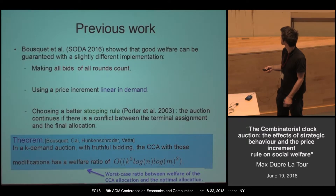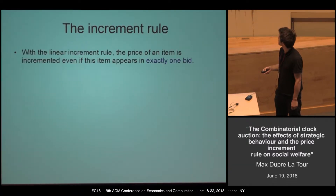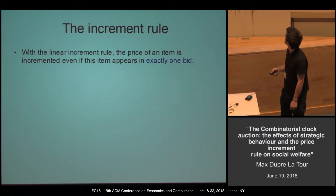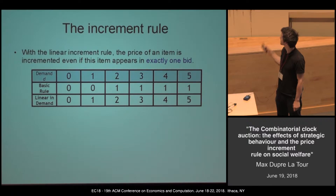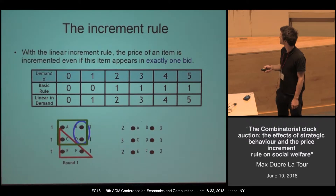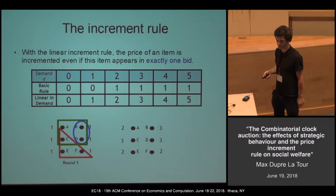The welfare ratio is the worst-case ratio between the welfare of the CCA allocation and the welfare of the optimal allocation. The main reason it is not satisfying is that with the linear increment rule, the price is incremented even if the item appears in exactly one bid — even without excess demand. This can be a problem because you may want to strategically reduce your demand to pay a lower price. This is called demand reduction and it is pretty common in auctions.